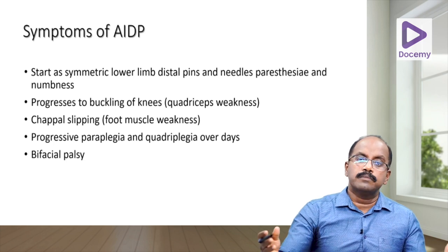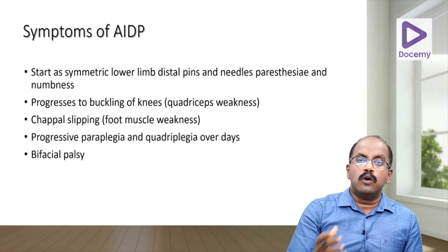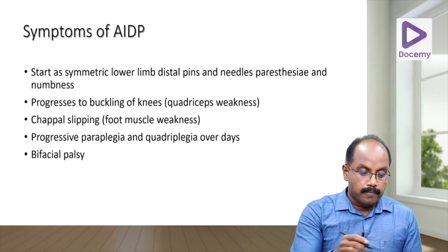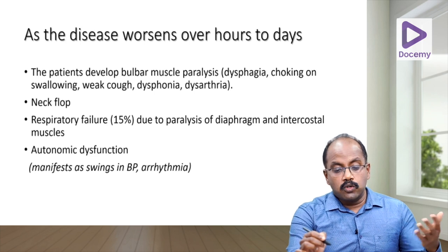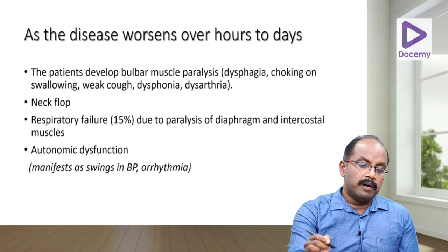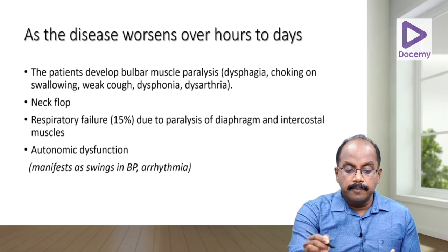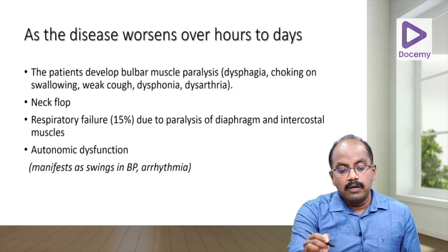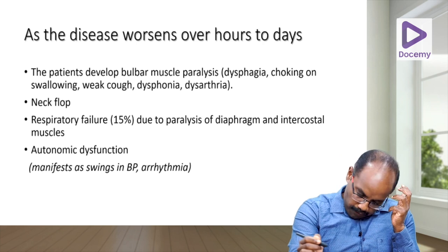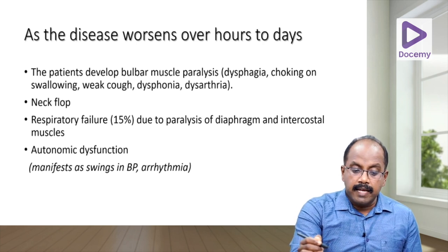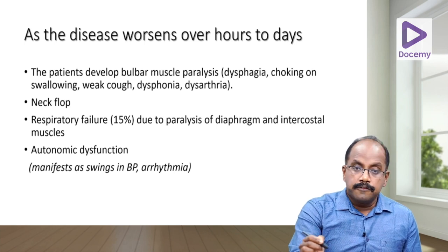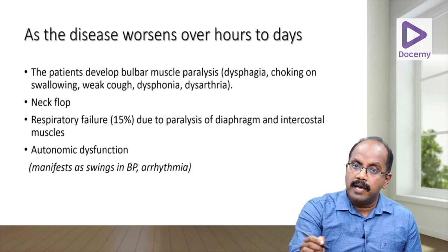As the disease worsens, patients may develop bulbar weakness — including dysphagia, choking on swallowing, weak cough, dysphonia, and dysarthria. The neck may flop down, and respiratory failure can occur due to paralysis of the diaphragm and intercostal muscles, requiring ICU admission and mechanical ventilation.